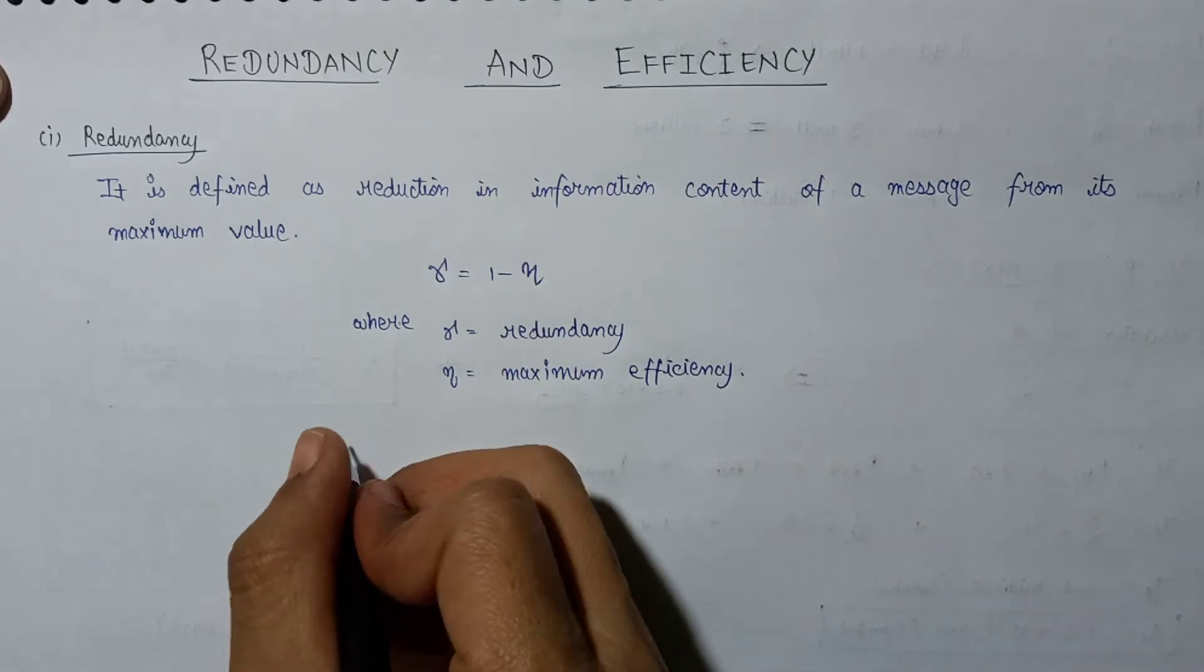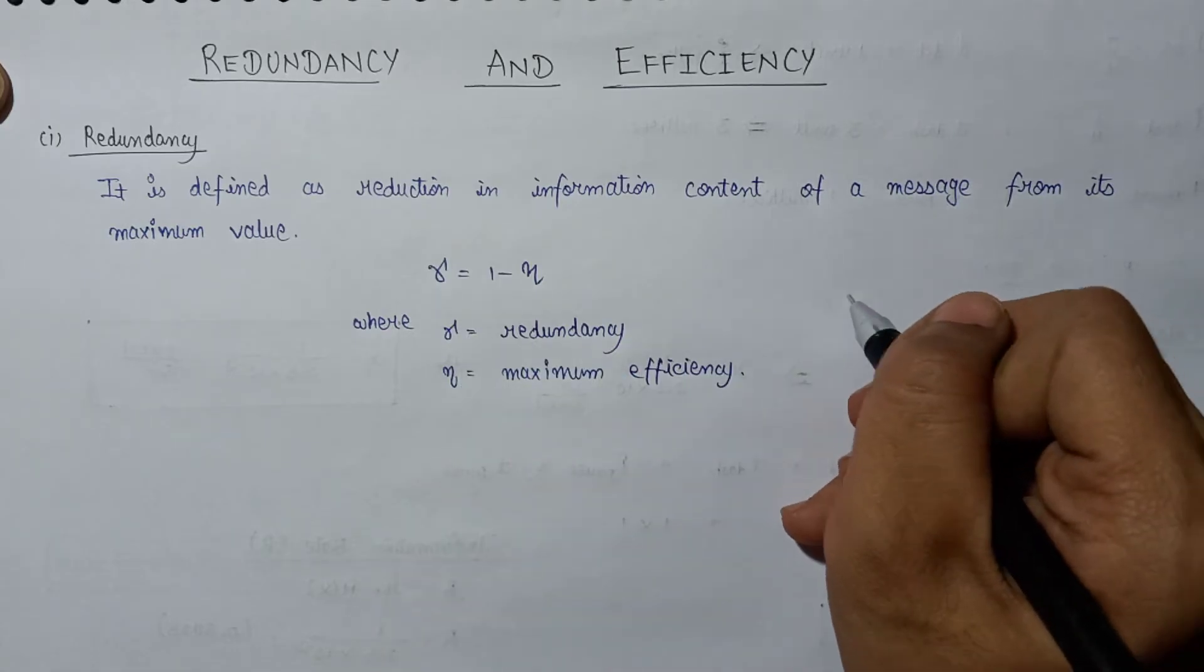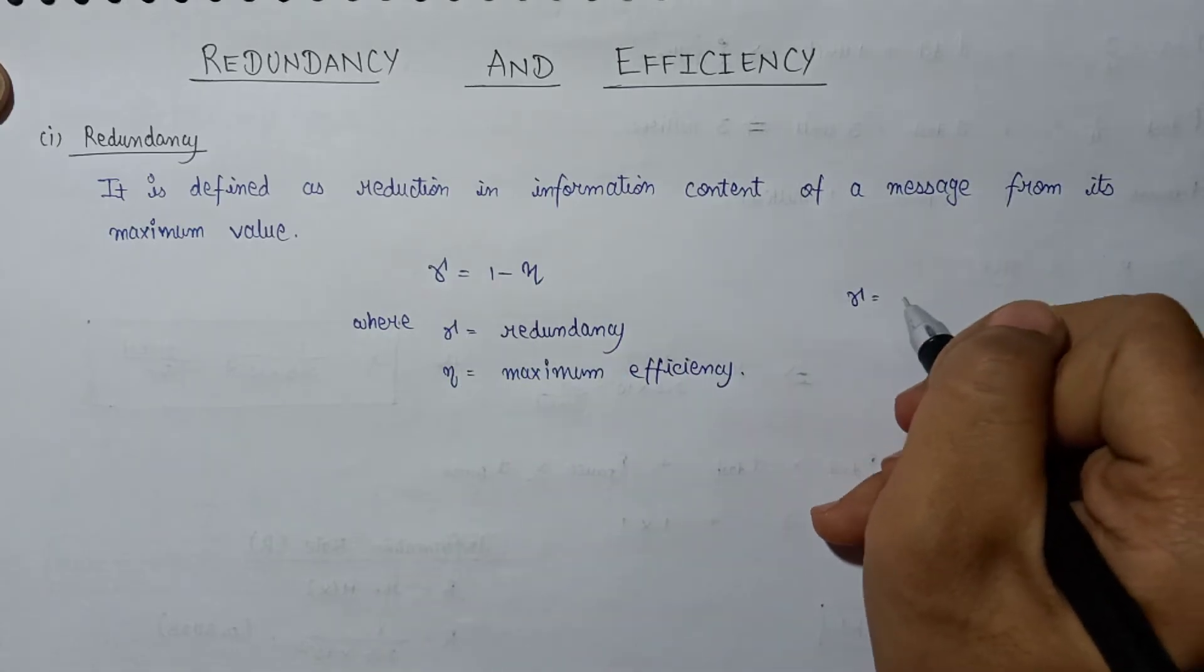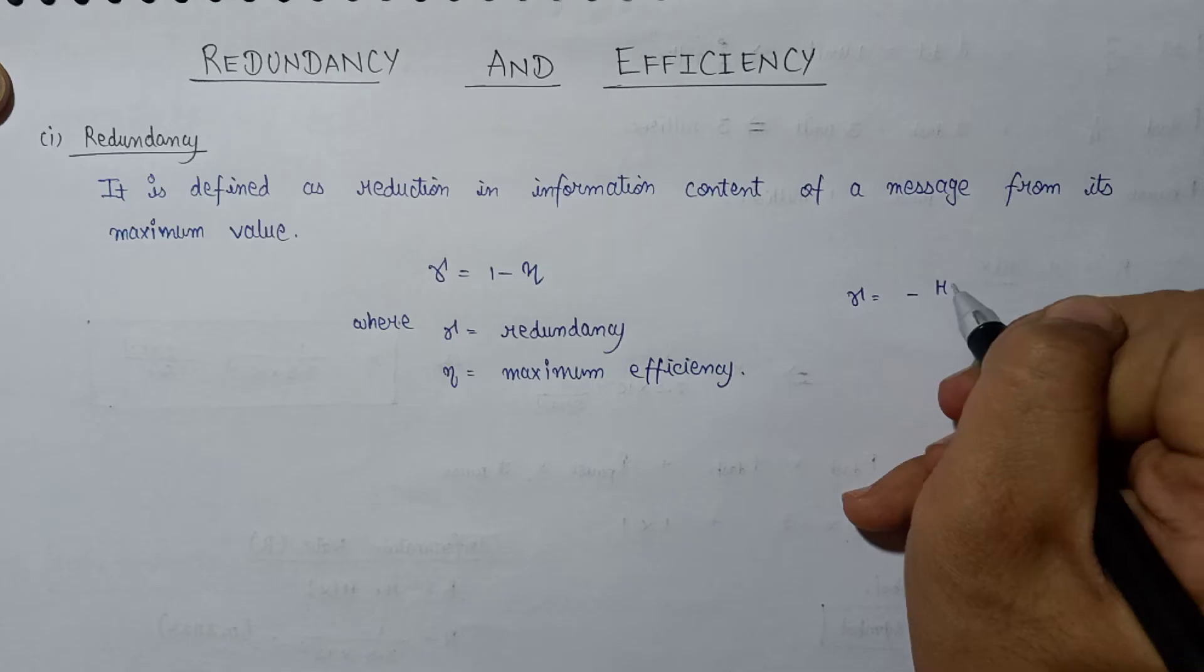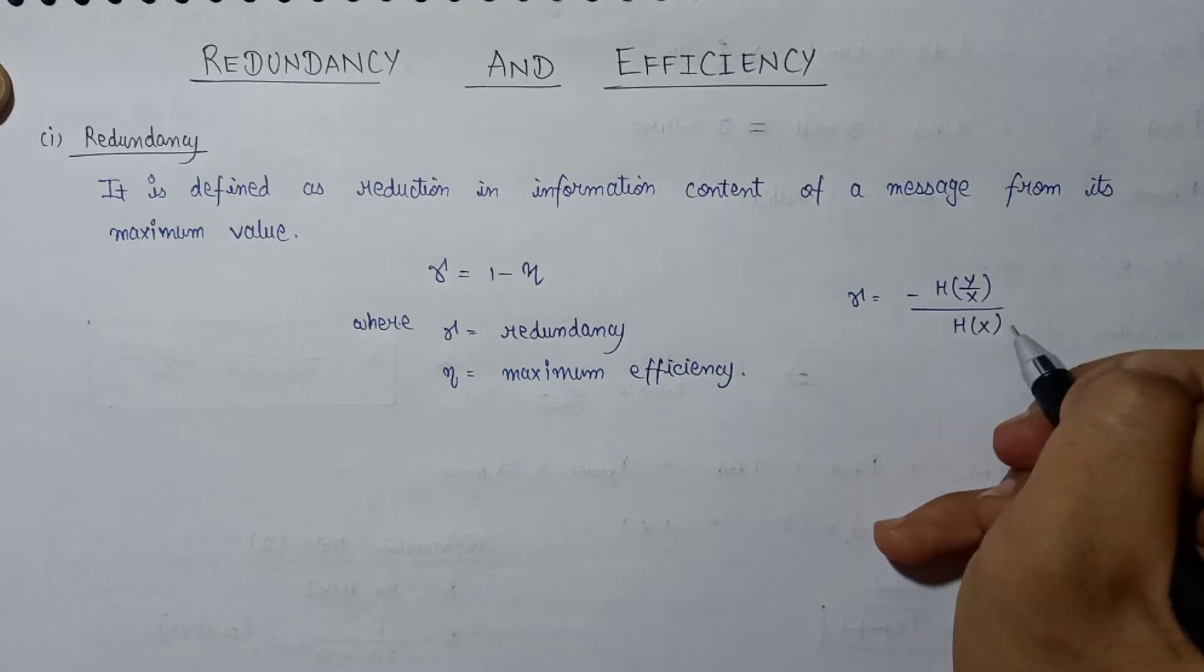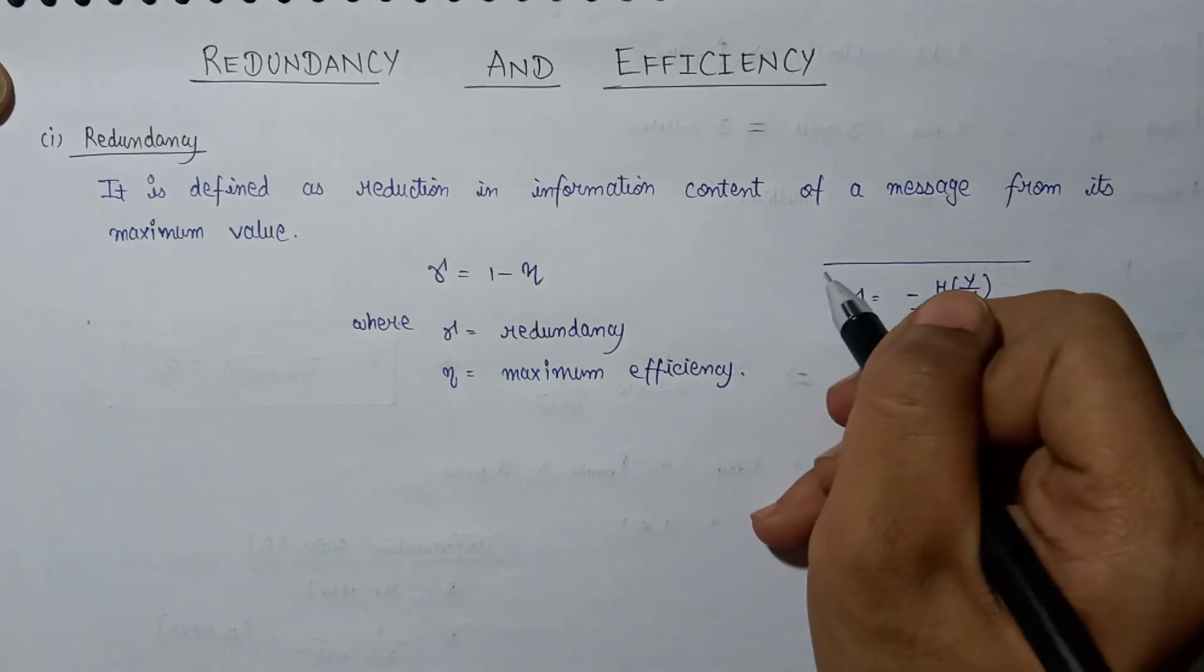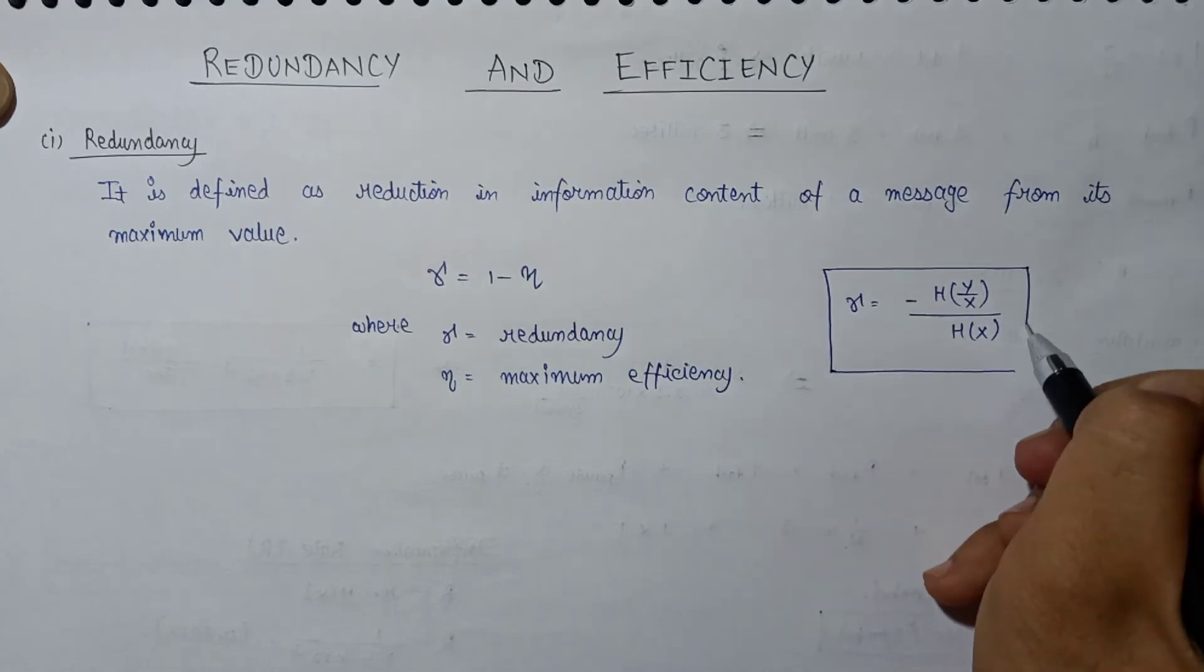So the mathematical expression for gamma is given as minus H of Y over X, over H of X. This is the mathematical expression of redundancy in terms of entropy.